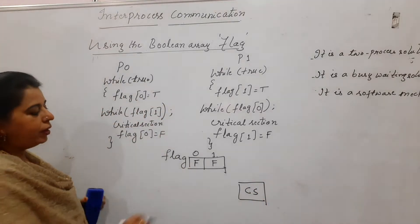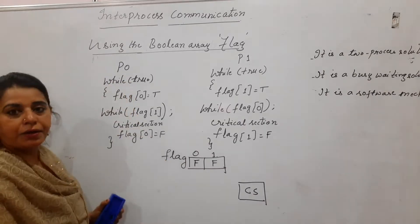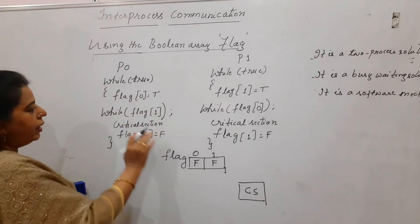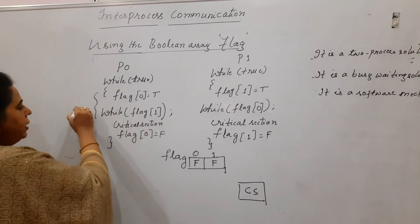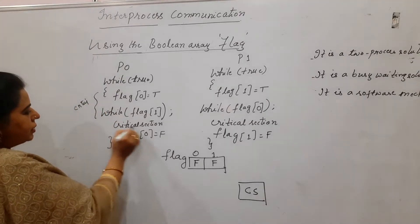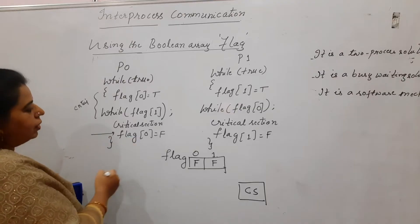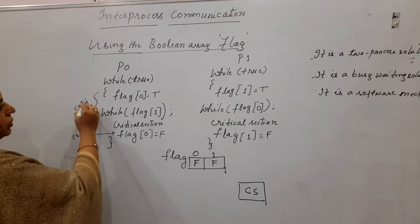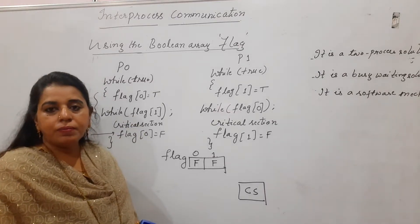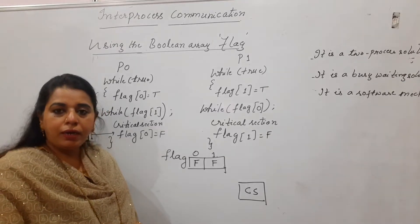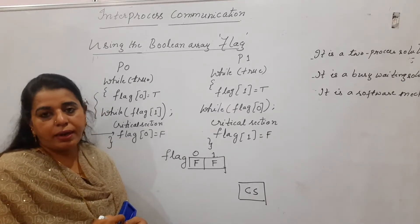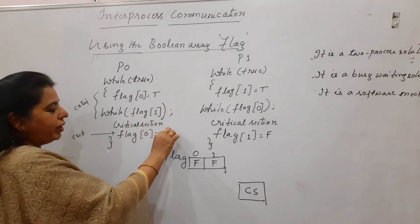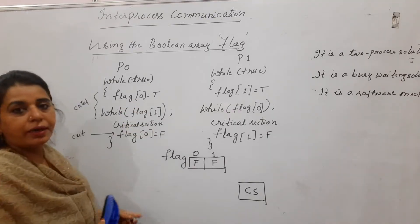Now P0 wants to enter the critical section. You can divide the lines of code into three sections: the flag assignment and while loop form the entry section, then comes the critical section, and finally 'flag[0] = F' is the exit part. Any solution's code must be divided into entry section, critical section, and exit section.